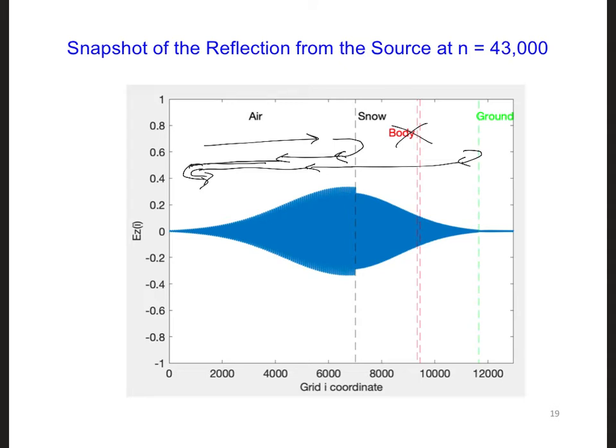If we were to zoom in on the plot and figure out exactly where this reflection was being generated, we would find that it was at the location of the source. That is, the reflection from the snow and ground is retro-reflecting off of our source.